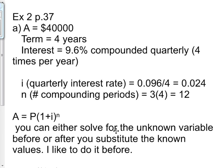A is the future value. So A equals the principal times 1 plus i to the power of n. Now, you can either solve for the unknown variable before or after you substitute the known values. I personally like to do it before.